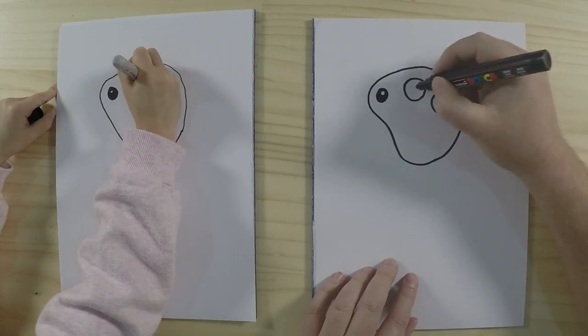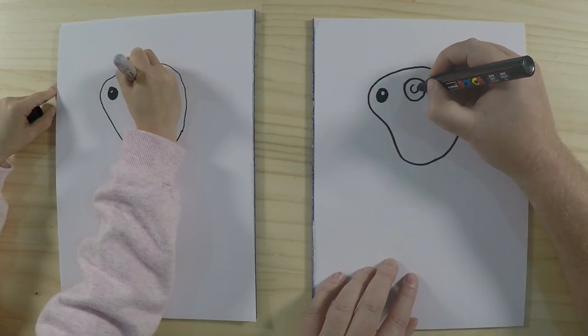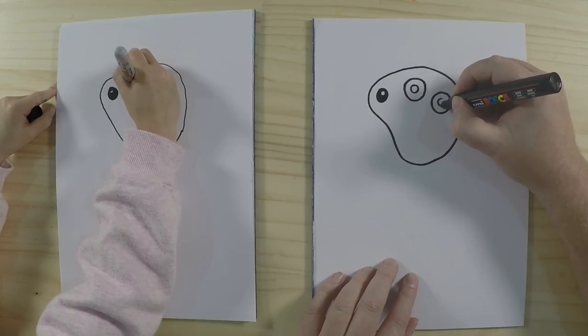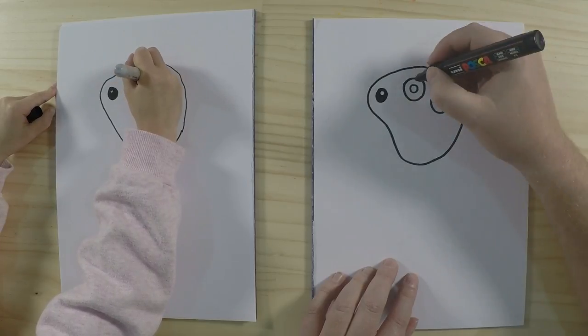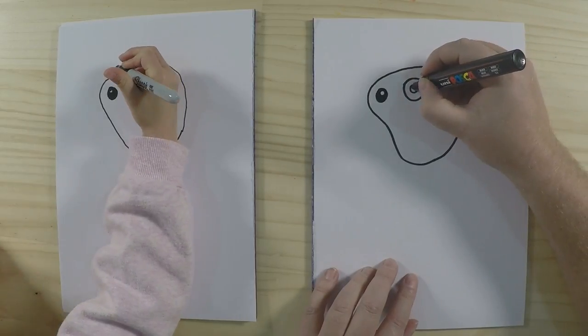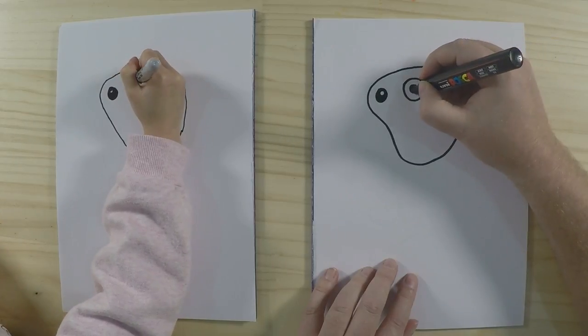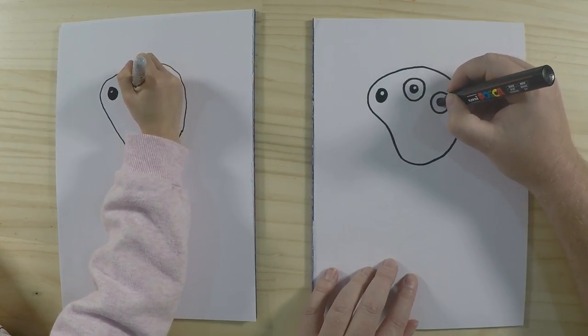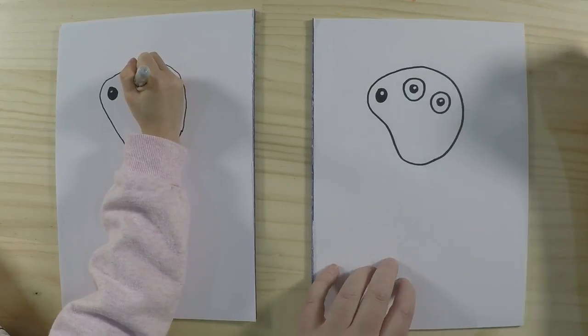And then inside that, draw pupils - so another two smaller circles. And again if you want to you can draw another little circle on there to give him some highlights, so again it looks like there is a light reflecting off his eyes.